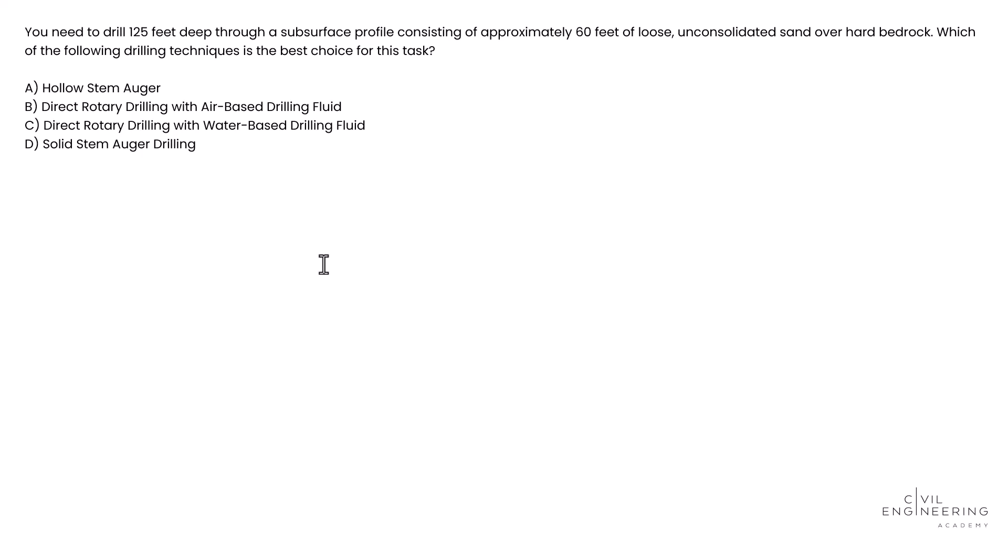So we just need to go through each one of these and figure it out. So the first one is a hollow stem auger. Well, hollow stem auger is basically just a drill that's hollow in the stem. This is my basic drill.